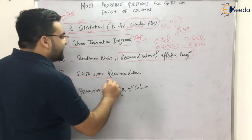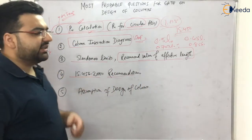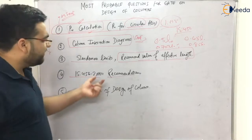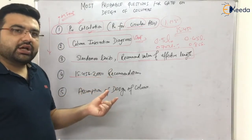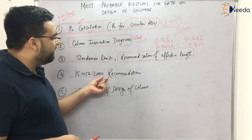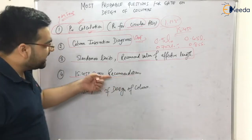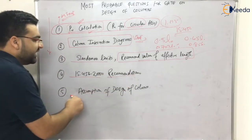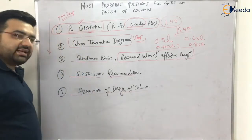Next, IS 456 has many recommendations about ties and lateral reinforcement, but these tend to be more theoretical questions. I feel GATE examiners will not focus much on this area, which is why it is listed at the end.